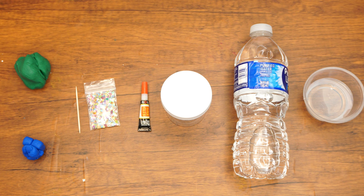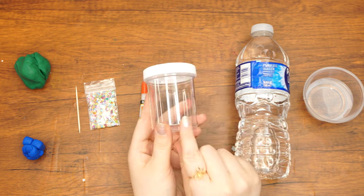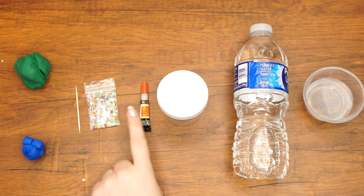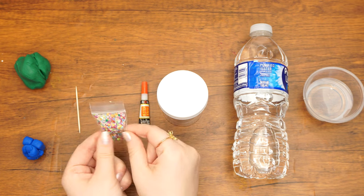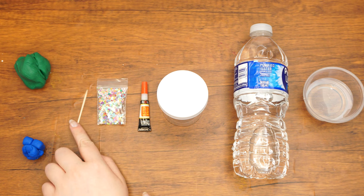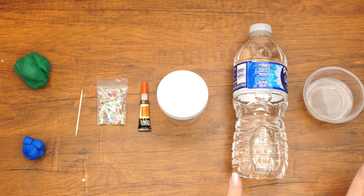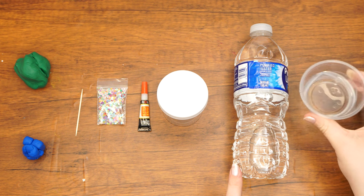Here are the supplies that we will need: a small plastic container with a cover, super glue, flower glitter, a toothpick, green and blue clay, water, and glycerin. Here we use vegetable glycerin.